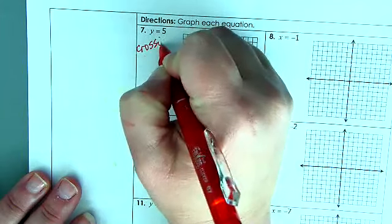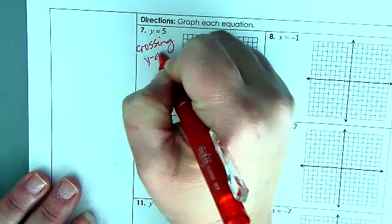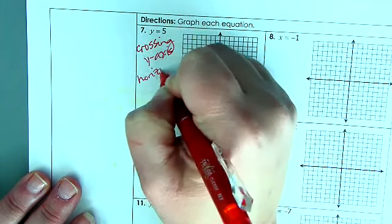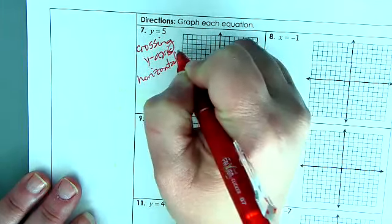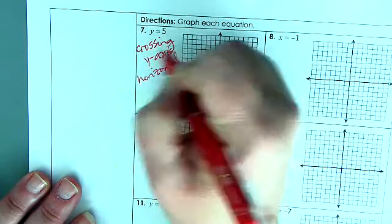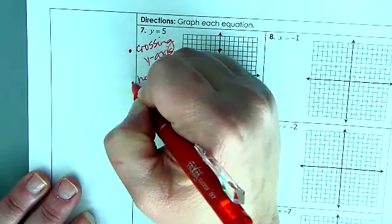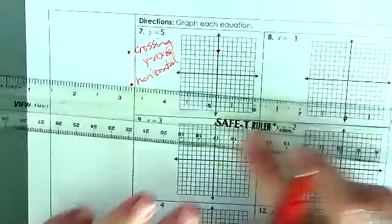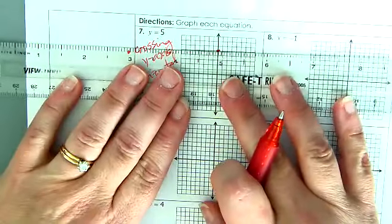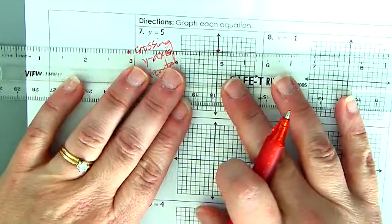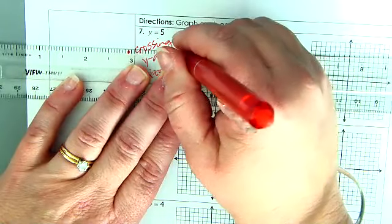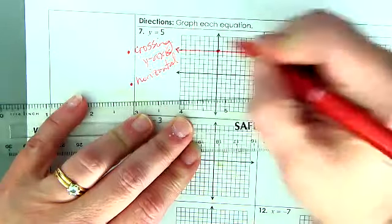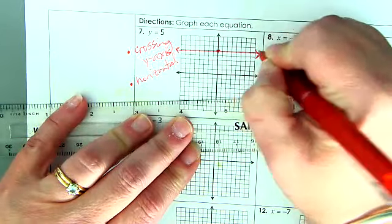Since it's y equals, I know it's crossing the y-axis, so that means it's going to be horizontal. Now I can take a straight edge and just draw a straight line that is horizontal. Draw your arrows and make sure that it goes the entire length of the graph.